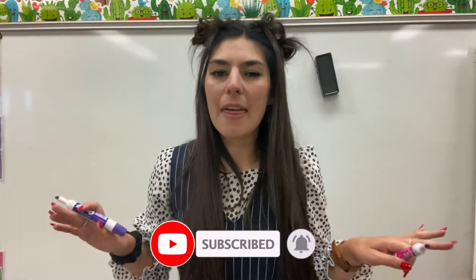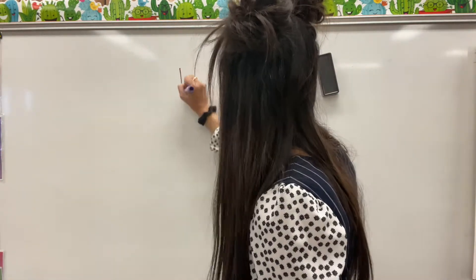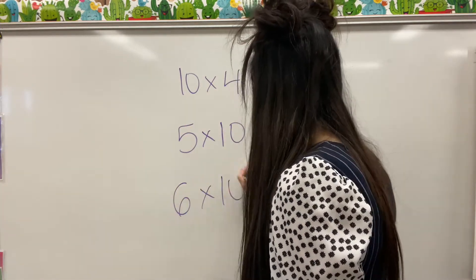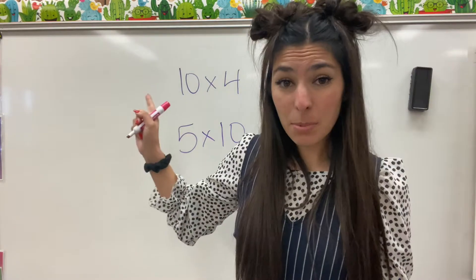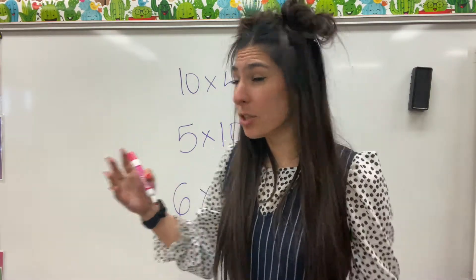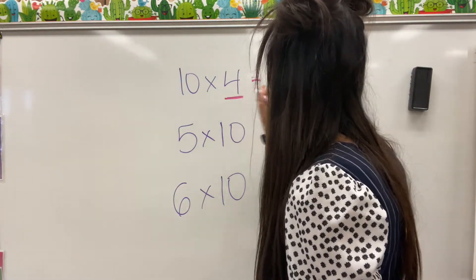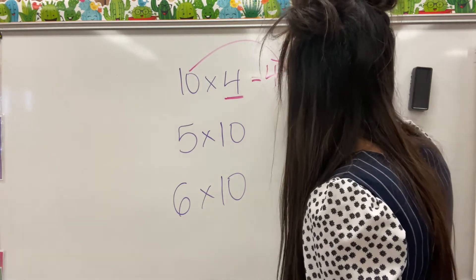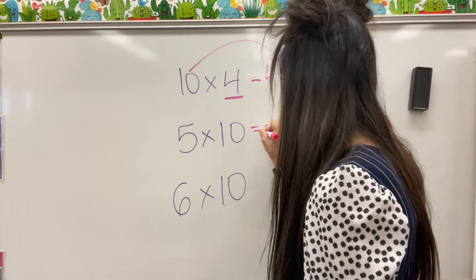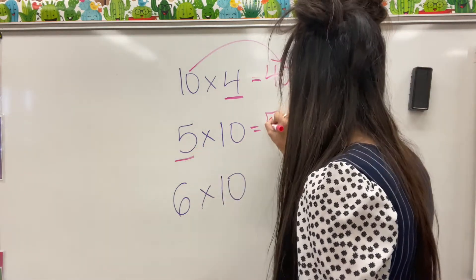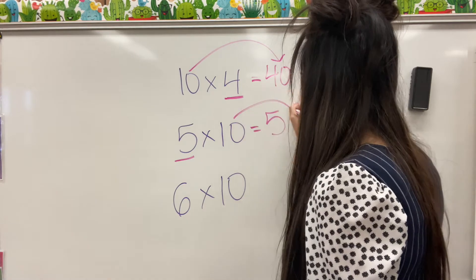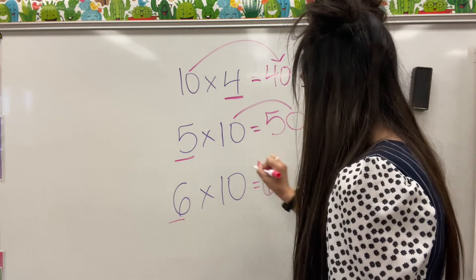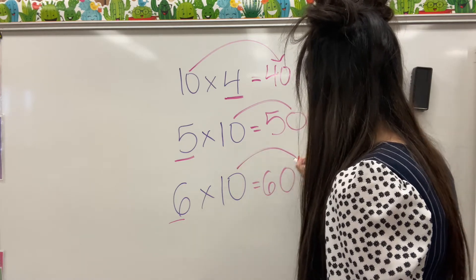So when we think multiplying by 10s, we tend to think the basics and so on. And with the simple version, you might realize what we really do here is we take this 4 and then we take this 0 and bring it on over. Here, we take the 5 and we add the 0. This one, 6 times 10, we take the 6, add the 0.